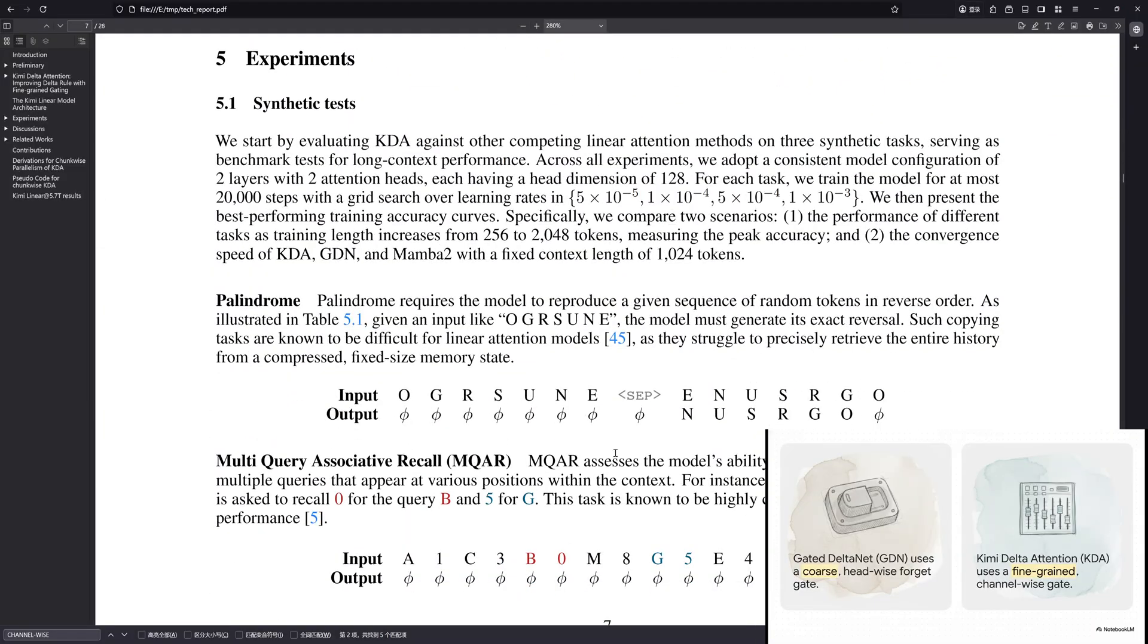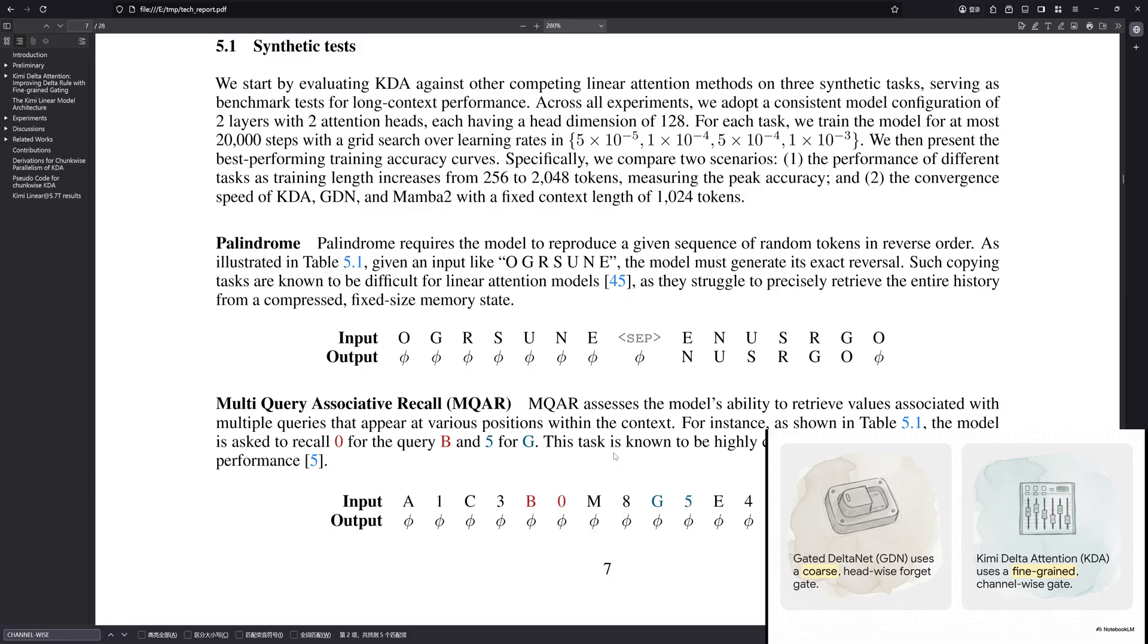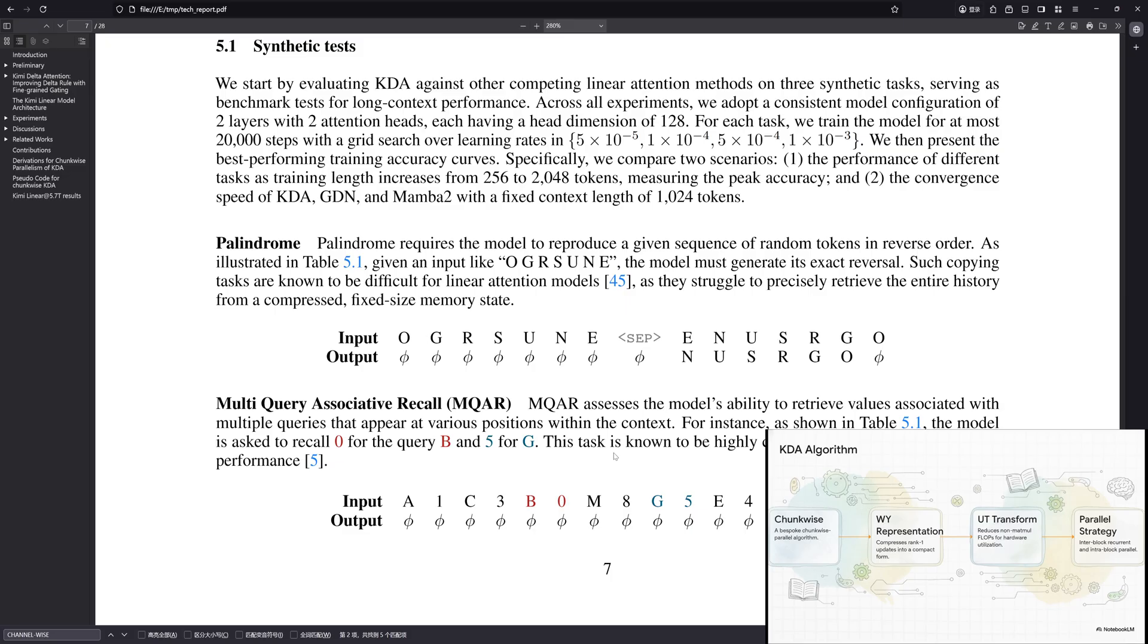And this slide just illustrates that difference perfectly. The older models? They used a coarse headwise gate. It's basically like a single, big on-off switch for a whole chunk of memory. But KDA? It introduces a channel-wise gate, giving every single feature its own independent dial for how quickly it fades. It's literally the difference between a single light switch for a room and a full-on audio mixing board with hundreds of sliders. And this isn't just some fancy theory. KDA is engineered from the ground up to be blazingly fast on modern GPUs. Under the hood, it's using all these clever tricks, grouping information in chunks, compressing it, and using some advanced math to slash the number of calculations needed. The bottom line is, it's just built for speed.